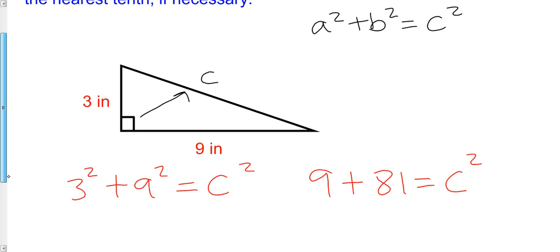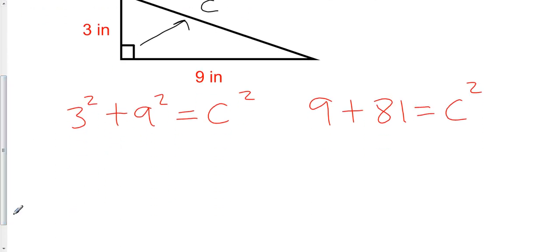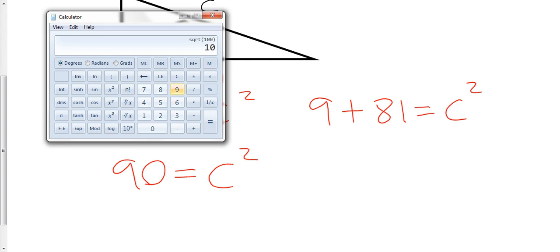And you can confirm those calculations on your calculator. 9 plus 81 is 90. 90 is equal to C squared. And I don't know what the square root of 90 is. I do know that the square root of 81 is 9. And I know that the square root of 100 is 10. So I know that my answer must be somewhere between 9 and 10. But I'm going to have to use a calculator here to give me an accurate approximation. So we're going to plug in 90.